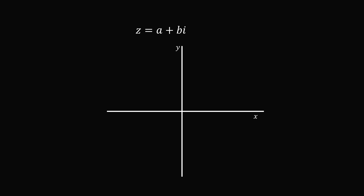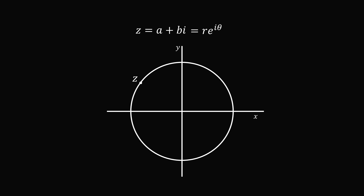In order to understand this better, we go to the complex plane. A complex number z is equal to a plus bi. We can also write this in polar form: r multiplied by e to the i theta. We can imagine a circle with radius r and angle theta. But this is not a unique angle — we can add 2pi to it, or any multiple of 2pi, and end up at exactly the same spot. So this number can also be written as r multiplied by e to the power of i times (theta plus 2pi k), for k being an integer.